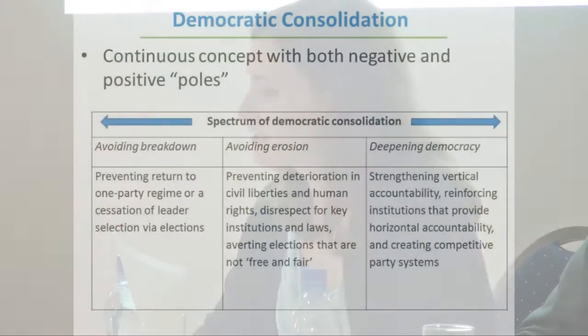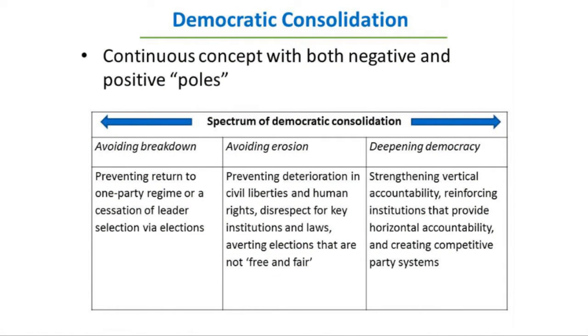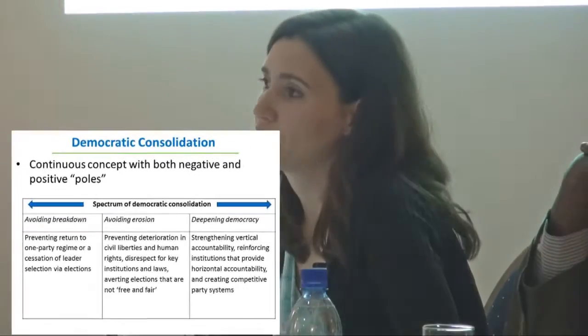When talking about democracy, we look at both transitions from one-party to multi-party regimes and then consolidation of democracy. Consolidation is a continuous concept with both negative and positive poles. On the negative side, we're trying to avoid breakdown — a transition back from a multi-party to a one-party regime. Occupying a middle ground is avoiding erosion, where we still have a multi-party regime but see deterioration in civil liberties, human rights, or presidents trying to change constitutions for additional term limits.